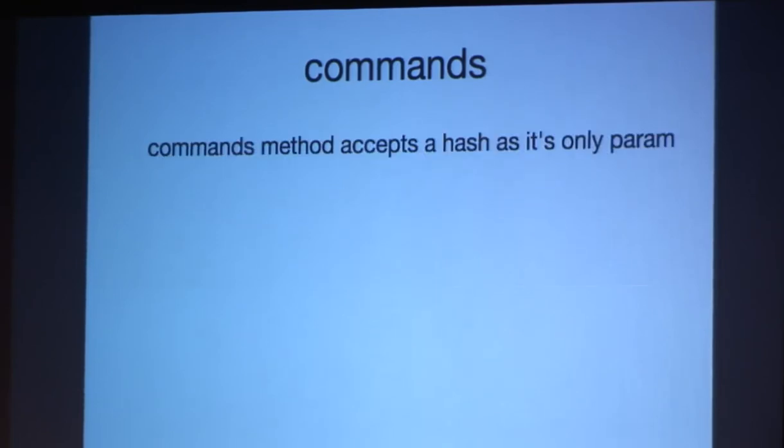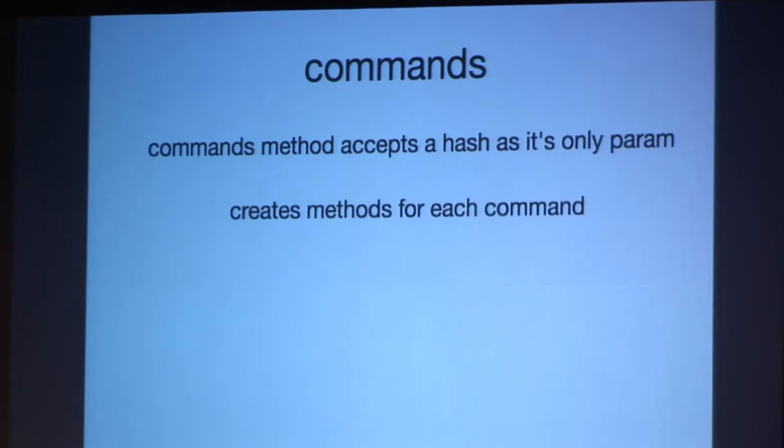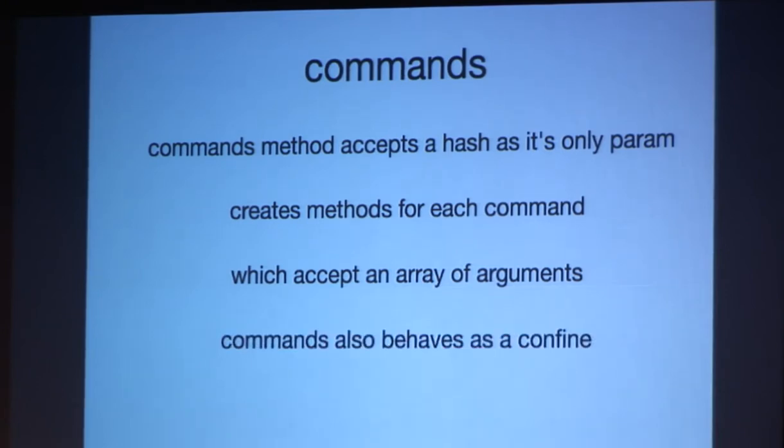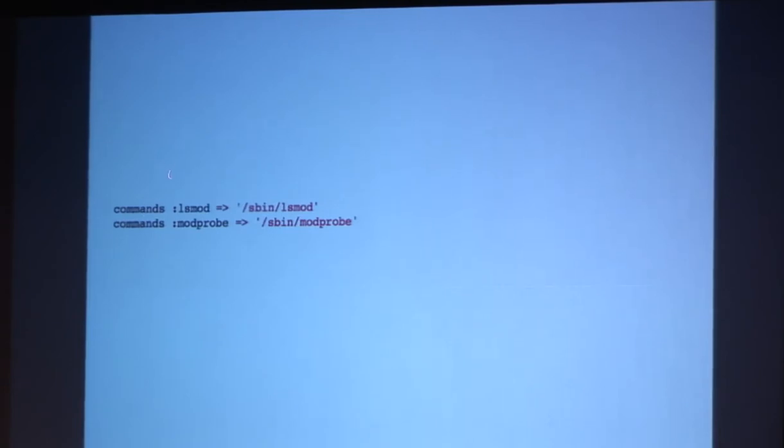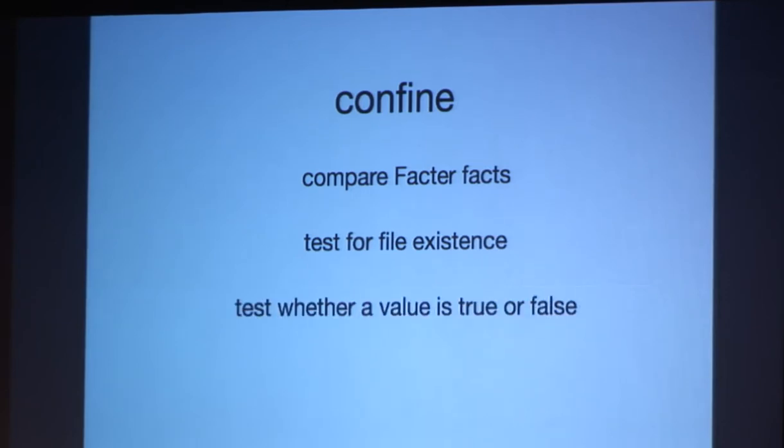So the commands method actually accepts the hash as a param. So in the case of ours, we actually went ahead and had one for lsmod and one for modprobe. And this could actually be different if you wanted to. But it takes that hash and creates methods for each of those commands, which accept an array of arguments. Commands also behave as confines. If a command doesn't exist on the system, then the provider's not going to work. So again, here's our commands method. Here's the name. And here's what it's actually pointing to. So confines are a great way to limit where the provider gets run. They can compare fact or facts. They can test for file existence. Or they can test whether a value is true or false. In our case, we actually don't need this confines, since hopefully, sbin modprobe doesn't live on other OSes. But just to illustrate, I went ahead and confined the kernel to Linux.